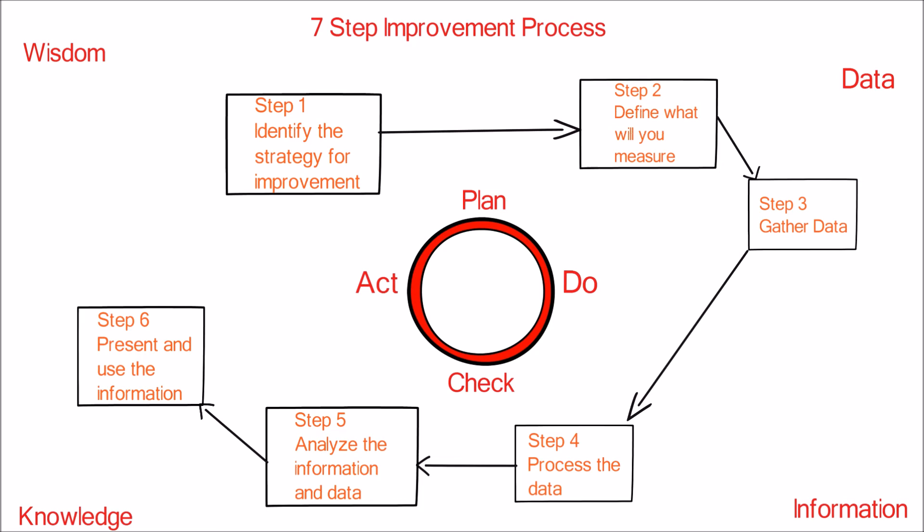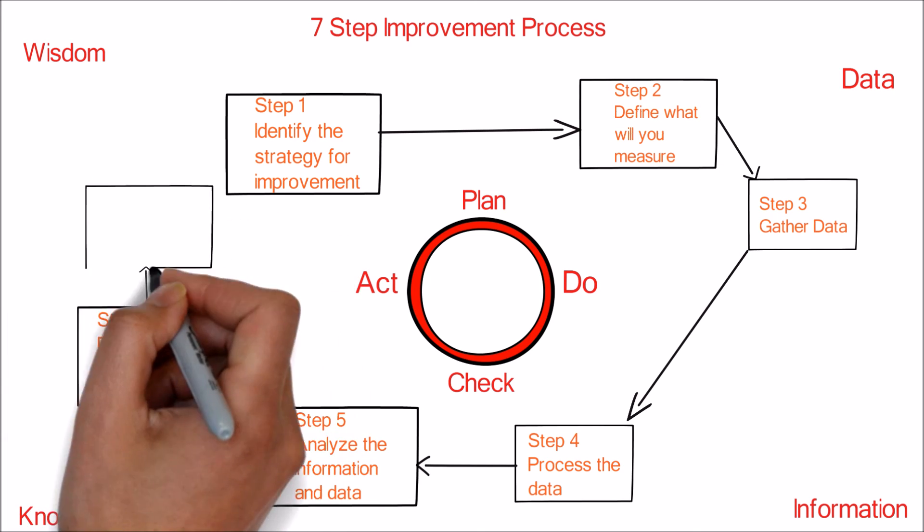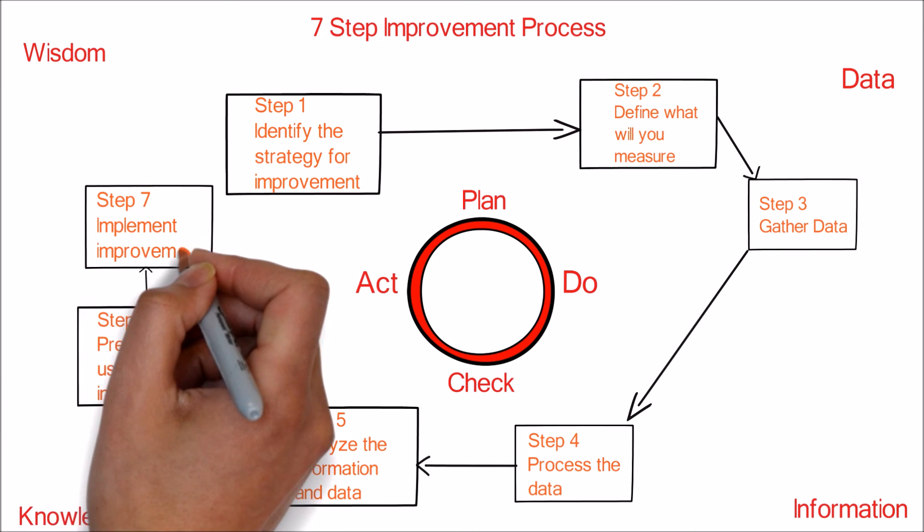The sixth step is to present and use the information. The analyzed data is shared with the business stakeholders in a clear and defined manner, presenting them an accurate picture of the results of the improvement plan that is implemented. CSI works closely with senior management and assists them to make strategic decisions and determine the next steps to optimize and improve the service.